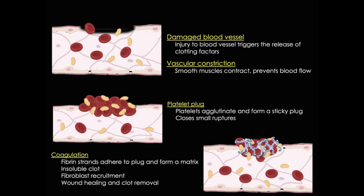Interestingly, non-steroidal anti-inflammatory agents such as ibuprofen or aspirin can inhibit coagulation, because they block prostaglandins — which are needed to cause platelet aggregation or agglutination and contraction. There are also some rare genetic disorders that involve factors on platelet surfaces needed to bind collagen and kickstart coagulation, and mutations in these factors can result in abnormally slow clotting.